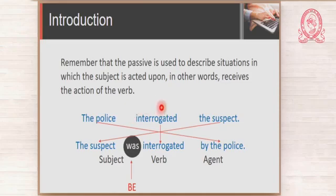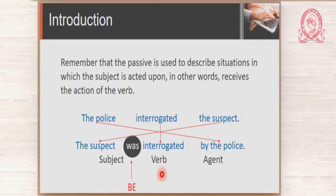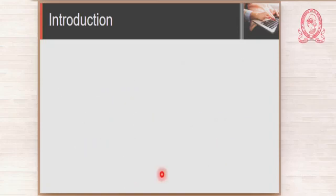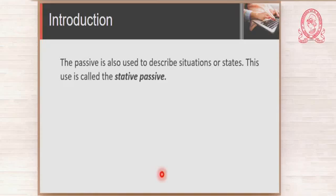The principal verb can be in the present, in the progressive, or in the present perfect. But anyway, the principal verb is always in the past participle when you have the passive. Now, let us continue with our lesson. The passive is also used to describe situations or states. This use is called the stative passive.